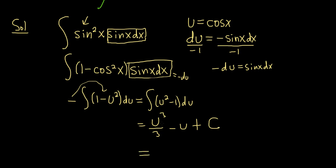The very last step is to replace u with what it is. So u is cosine. This will be 1 third cosine cubed of x minus cosine of x plus capital C. And that would be the final answer.